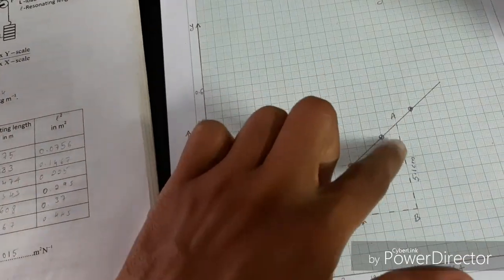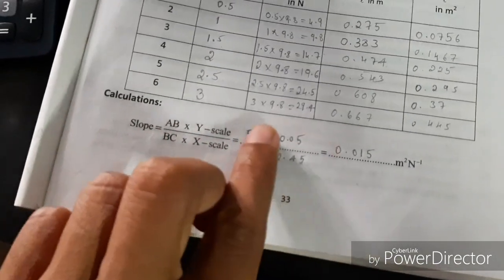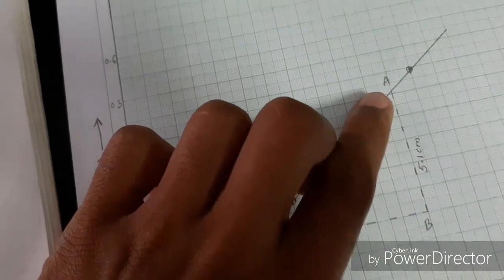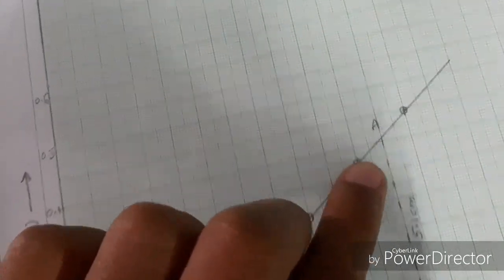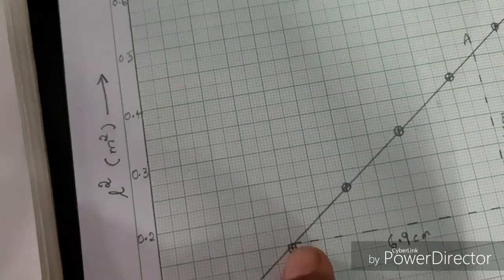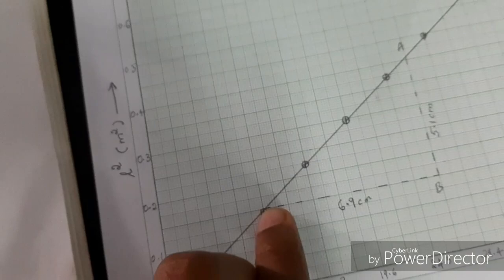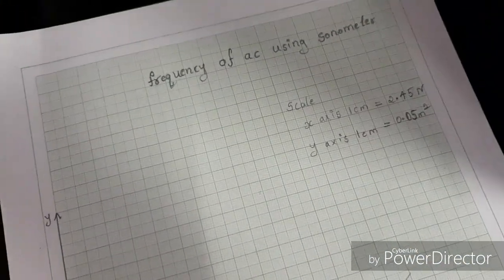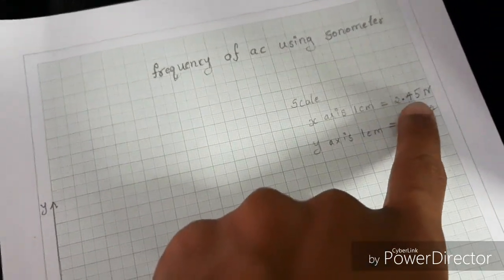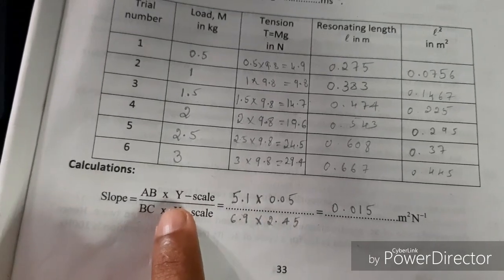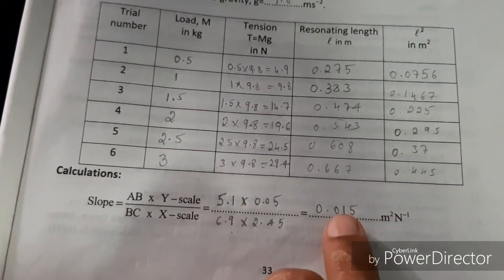Now take a slope like this. Substitute AB and BC values in your formula. This AB equals to 5.1 centimeter. Here BC equals to 6.9 centimeter. After substituting this AB and BC value, the y-scale value I have is 0.05 and x-scale value 2.45. After calculating this, I got 0.015 as my slope.